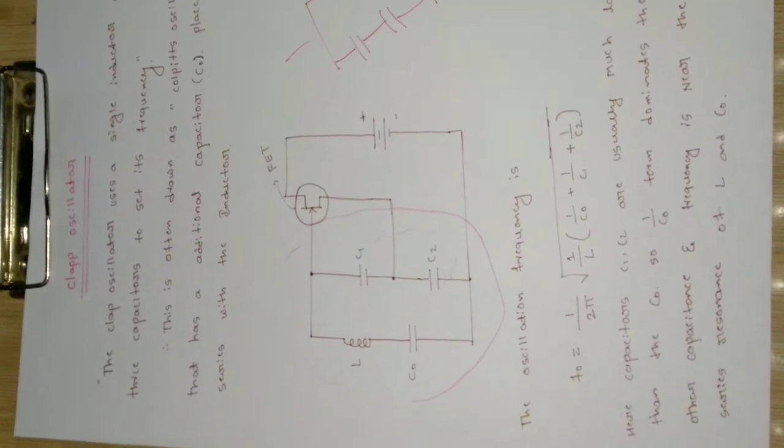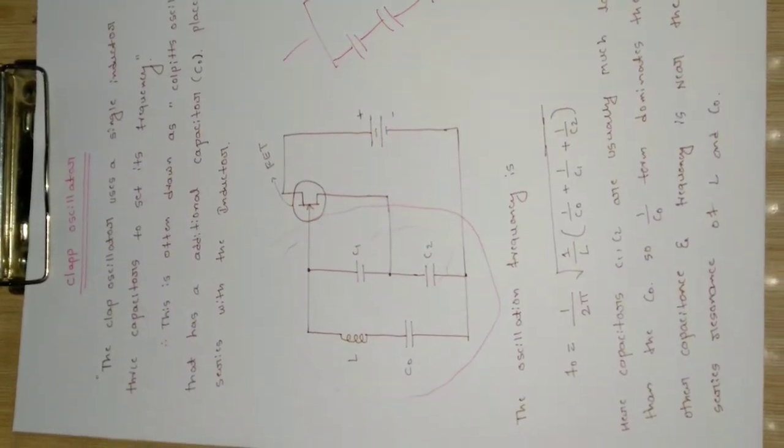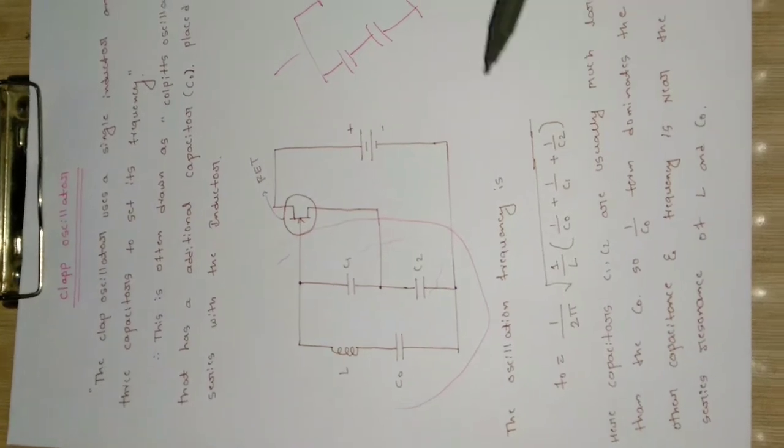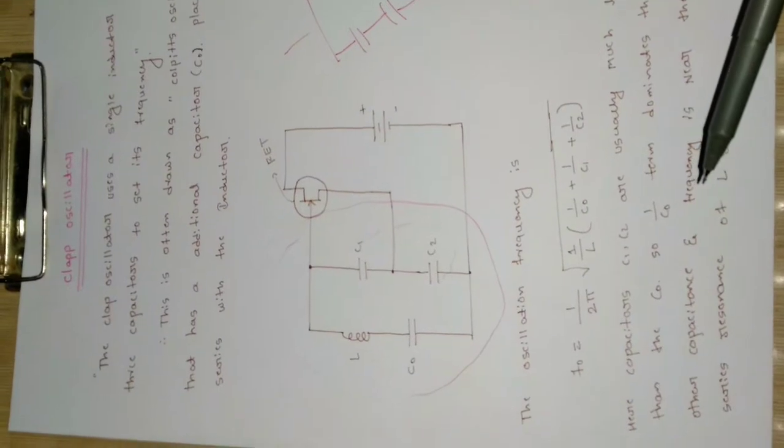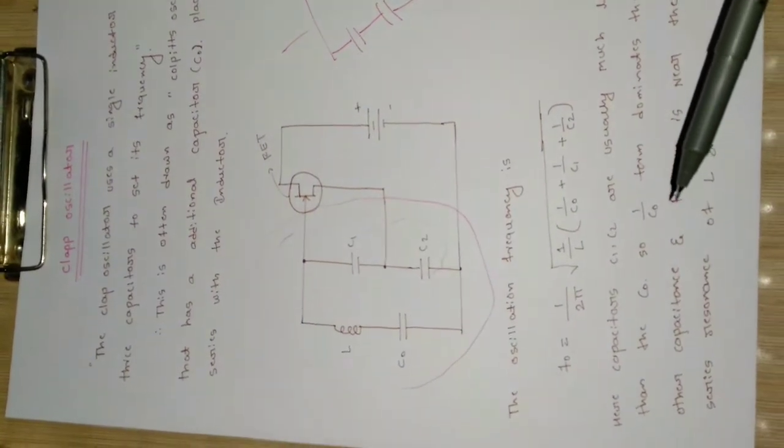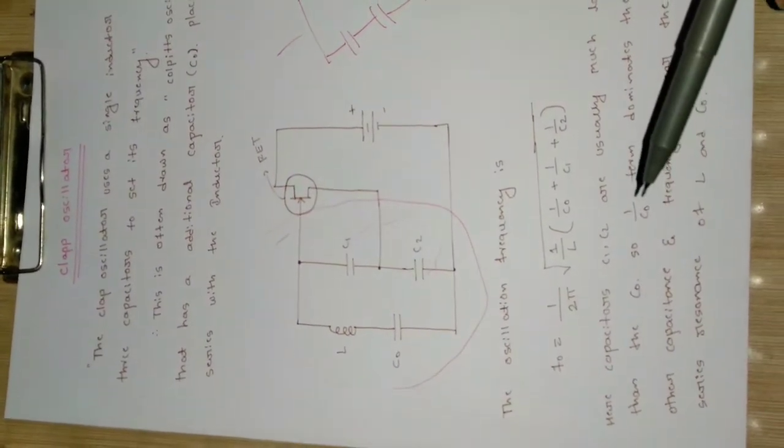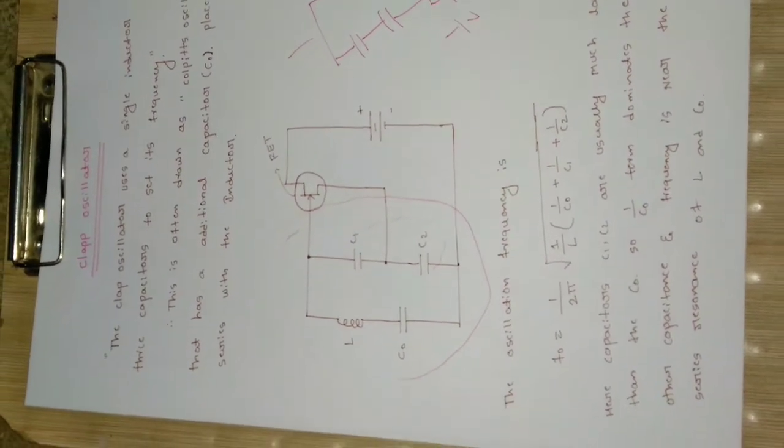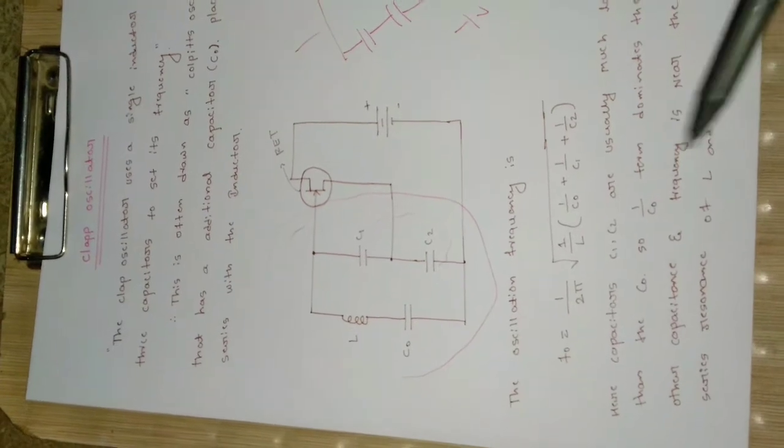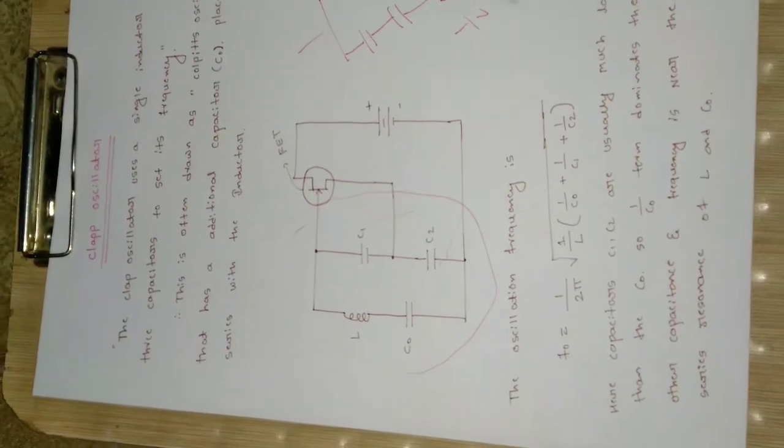Capacitors C1 and C2 are usually much larger than C0. When we consider the impedances offered by the inductor and capacitors, 1/C0 will dominate because C0 is very small compared to C1 and C2.